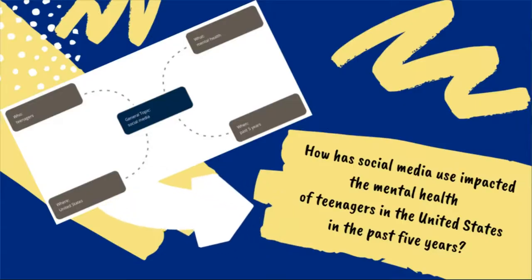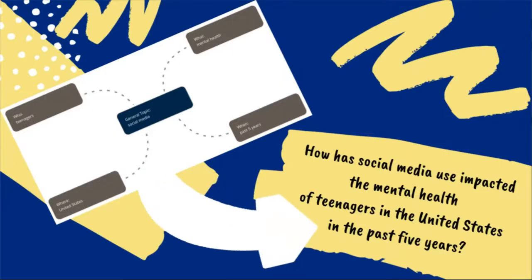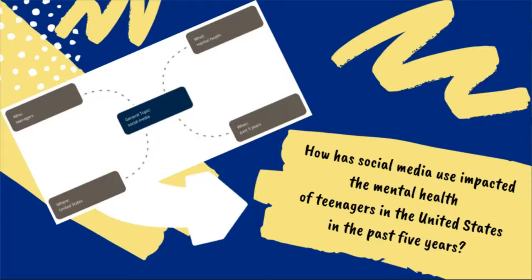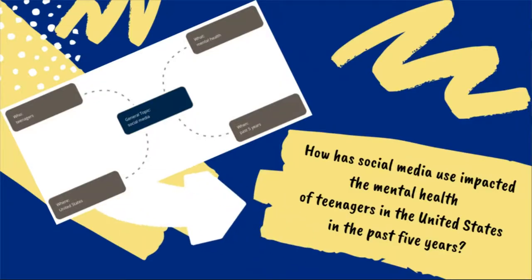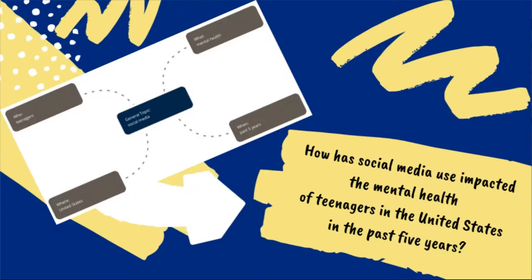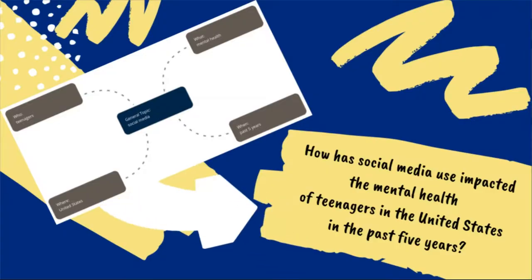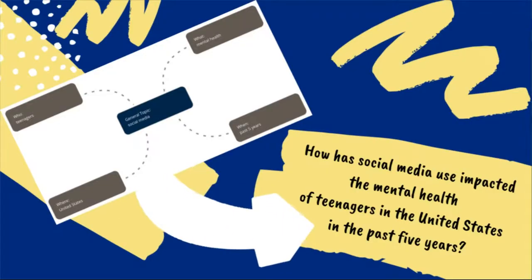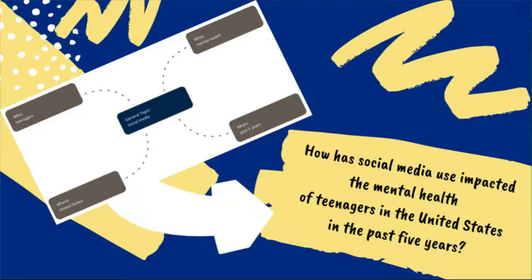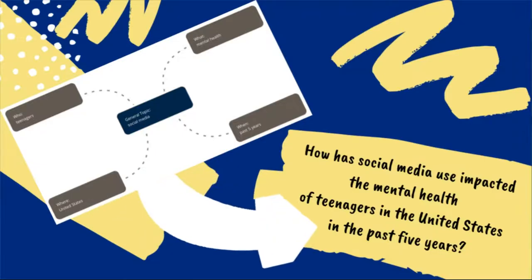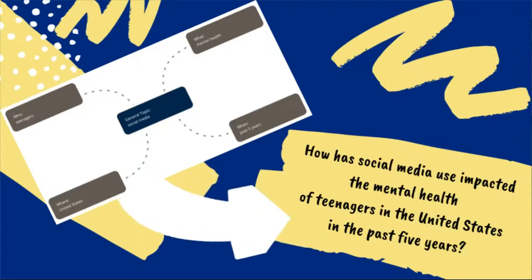Let's go back to our previous example where we narrowed down our topic on social media. Based on the concept map we created, my research question might be something like: how has social media use impacted the mental health of teenagers in the United States in the past five years? This research question will guide you continuously as you write your paper, form the basis of your research activities, and be essential to developing your thesis statement.